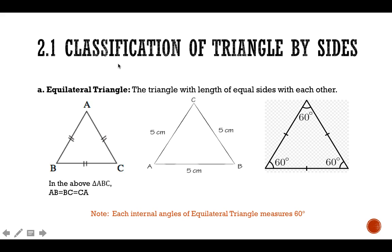Now we come to the classification of triangles by their sides. An equilateral triangle is a triangle where all three sides are equal in length — for example, five, five, five. All the internal angles of an equilateral triangle measure 60 degrees. In notation, we write AB equals BC equals CA.